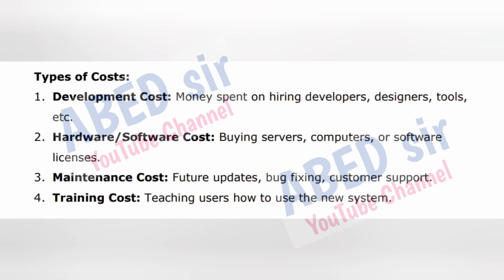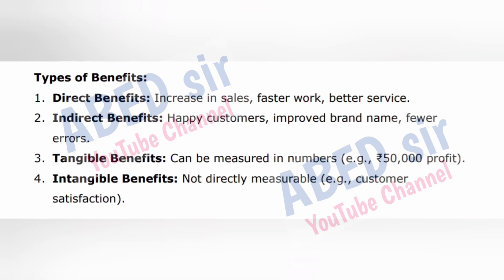Types of costs: one, development cost — money spent on hiring developers, designers, tools; two, hardware and software cost — buying servers, computers, or software licenses; three, maintenance cost — future updates, bug fixing, customer support; four, training cost — teaching users how to use the new system. Types of benefits: one, direct benefits — increase in sales, faster work, better service; two, indirect benefits — happy customers, improved brand name, fewer errors; three, tangible benefits — can be measured in numbers, example 50,000 rupees profit; four, intangible benefits — not directly measurable, example customer satisfaction.